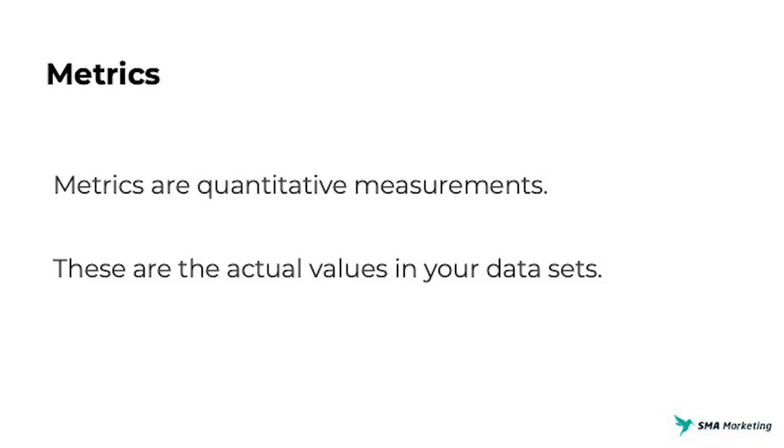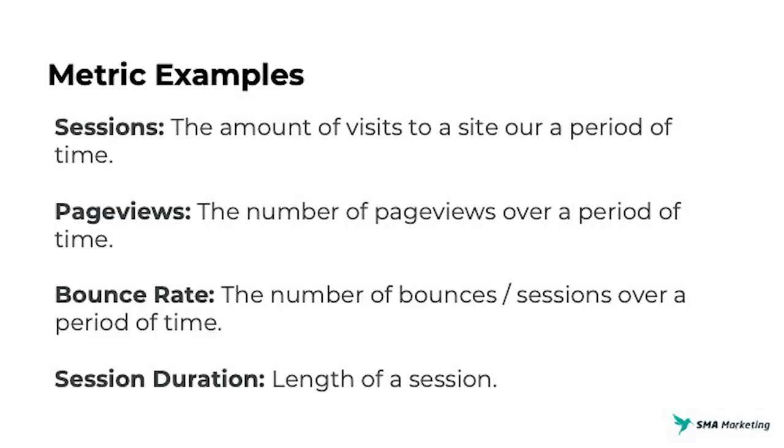So what are metrics? Metrics are quantitative measurements — these are things that can be counted, the numbers in your actual data sets. We want to use dimensions to describe or segment or slice, and we want to use metrics to understand the numbers behind each of those sections. Common metrics include sessions — the amount of visits that came to your site — or page views, the number of pages that somebody saw. It could be bounce rate, the amount of people that came to your site and left before taking a specific action, or average session duration, the time somebody spent on your site. All of these can be quantified, as opposed to dimensions which are more attributes or descriptions of the things that we're counting.